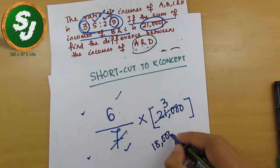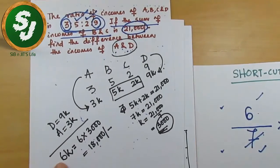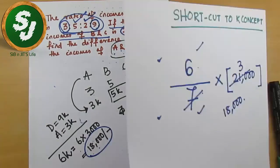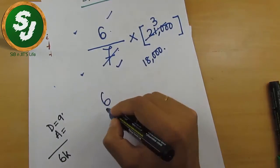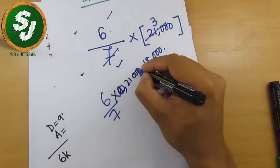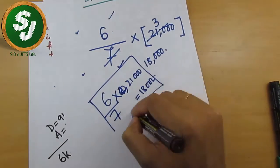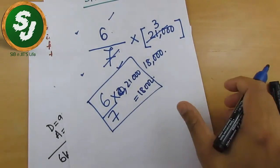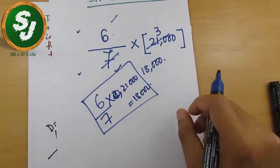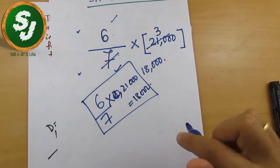In the last question, our answer after so much hard work was found to be 18,000. But in this shortcut I just write 6 divided by 7, into 21,000, which directly gives 18,000. That's all that has to be written. We will see this same shortcut concept applied to the K concept in the next video by solving another question.